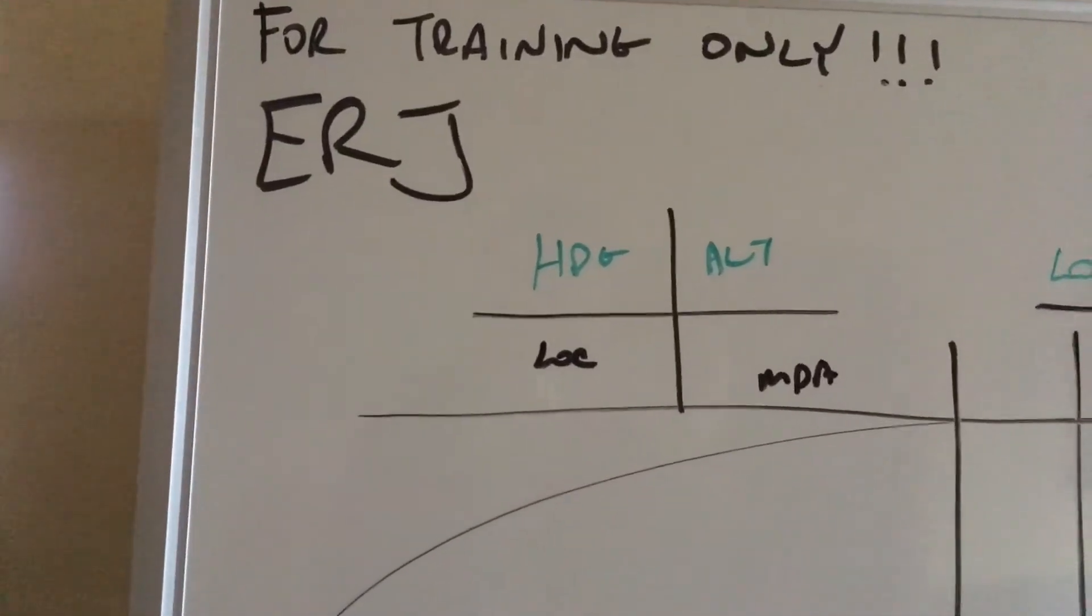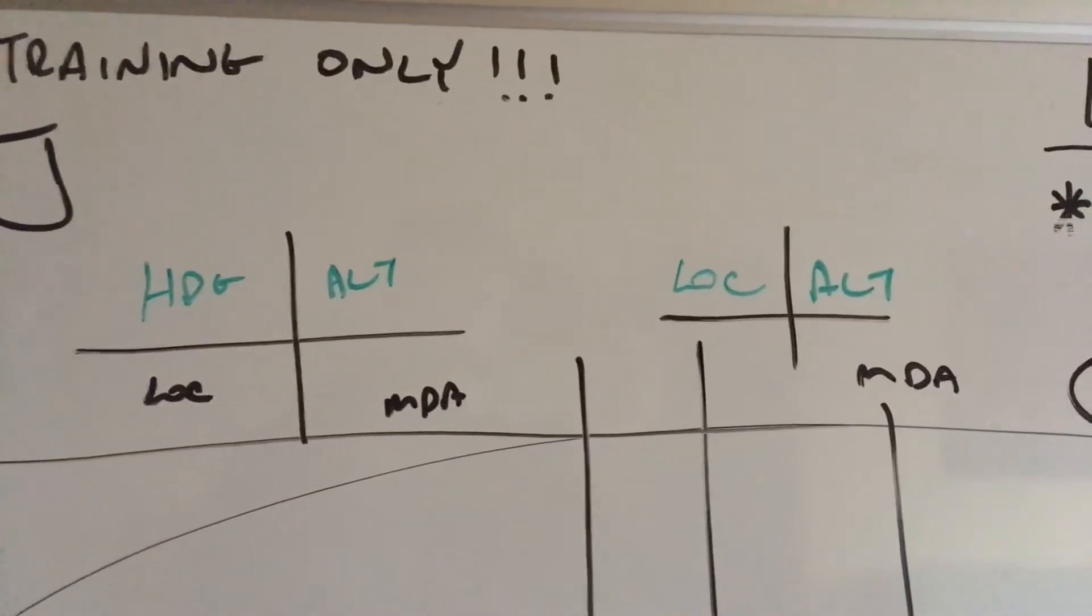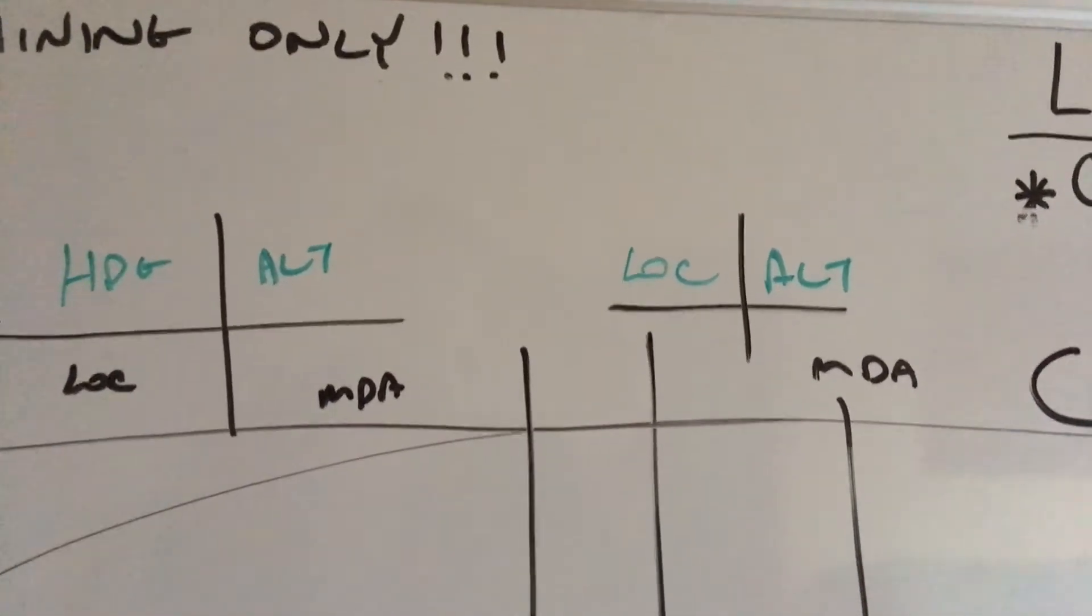Alright, so localizer is armed. Then we're going to capture the localizer, so it'll be localizer altitude with MDA set.